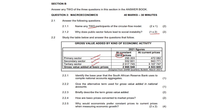2.2.2: Give the alternative term used for gross value added in national accounts. If you don't know this one, you're a bit cooked — it's going to be GDP, gross domestic product.